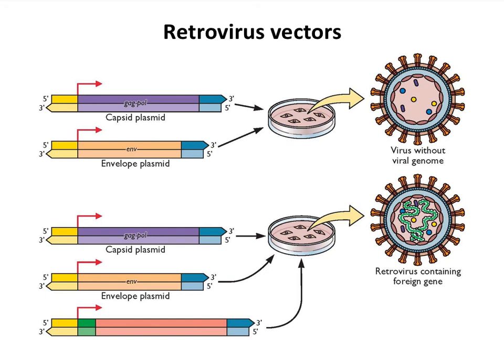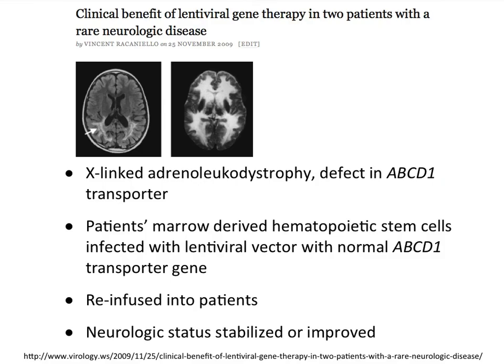One example is X-linked adrenoleukodystrophy, a typically fatal CNS disease caused by a defect in a transporter called ABCD1. In a small trial, two children with this disease had their bone marrow removed, infected in culture with a lentiviral retroviral vector carrying the normal gene, and then the cells were infused back into the patients. Their disease stabilized — they stopped degenerating, and one improved. It's a small clinical trial, but a clear example of what you can do with viruses.